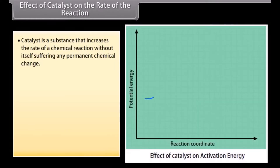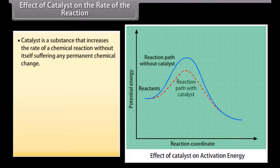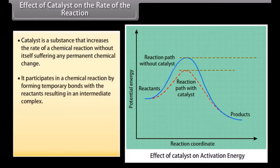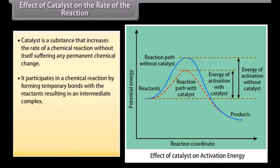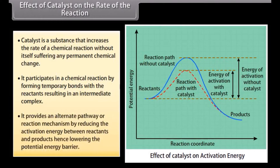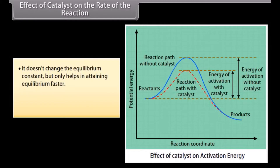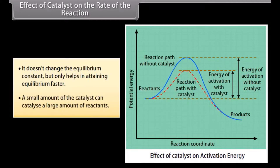Effect of catalyst on the rate of the reaction. A catalyst is a substance that increases the rate of a chemical reaction without itself suffering any permanent chemical change. It participates by forming temporary bonds with reactants, resulting in an intermediate complex. It provides an alternate pathway by reducing the activation energy between reactants and products, hence lowering the potential energy barrier. It doesn't change the equilibrium constant but only helps in attaining equilibrium faster. A small amount of catalyst can catalyze a large amount of reactants.